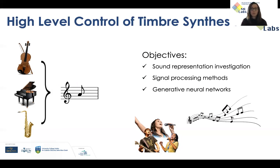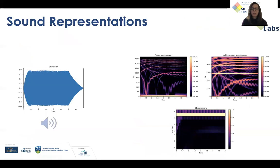Let's start with a simple example. Let's assume that we have this incredible sound here that produces this waveform on the left, which is so rich that we cannot extract any information out of it. Therefore, we can use some simple signal processing techniques to create other sorts of representations that would have more meaning to us — such as a power spectrogram, mel frequency spectrogram, chromogram, or many others.